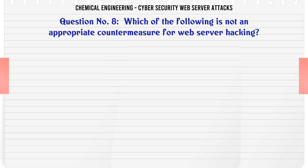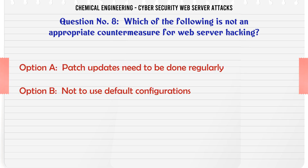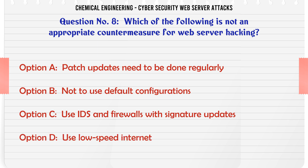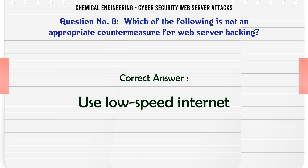Which of the following is not an appropriate countermeasure for web server hacking? A. Patch updates need to be done regularly. B. Not to use default configurations. C. Use IDS and firewalls with signature updates. D. Use low speed internet. The correct answer is D. Use low speed internet.